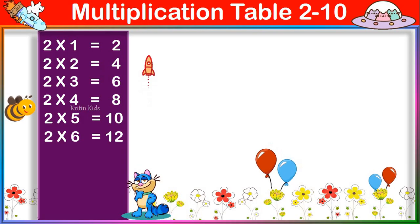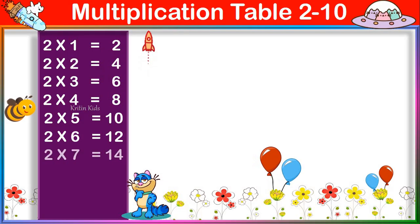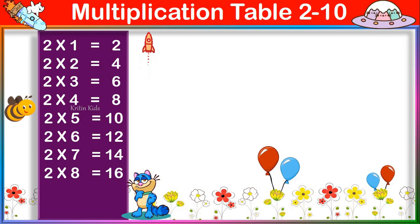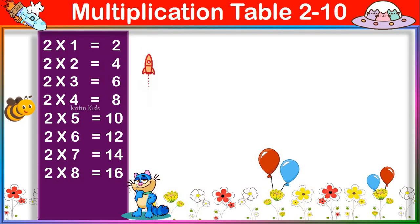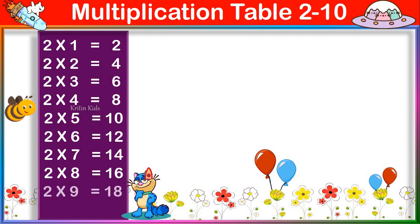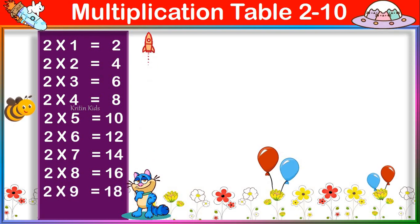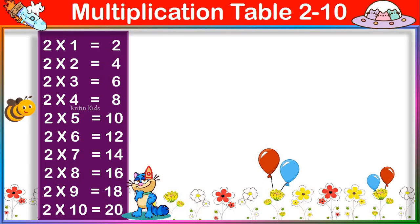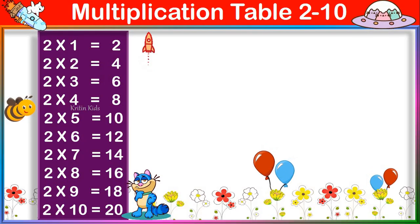2 six's are 12, 2 seven's are 14, 2 eight's are 16, 2 nine's are 18, 2 ten's are 20.